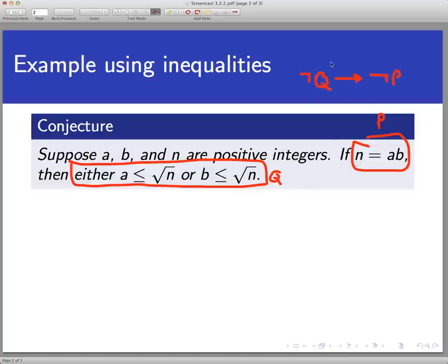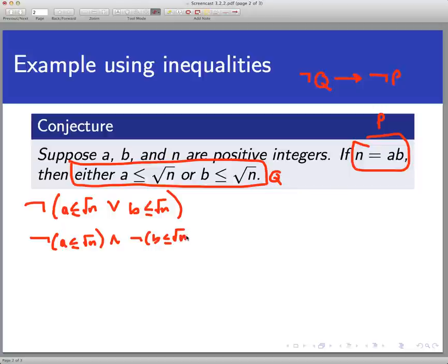So let's think about what that would look like. I need to form the negation of this thing in here. So I would need to negate the statement a is less than or equal to radical n or b is less than or equal to radical n. Now we know from our logical equivalencies rules that this actually transforms into something. I would negate a less than or equal to radical n, and this would turn into an and negate b less than or equal to radical n as well.